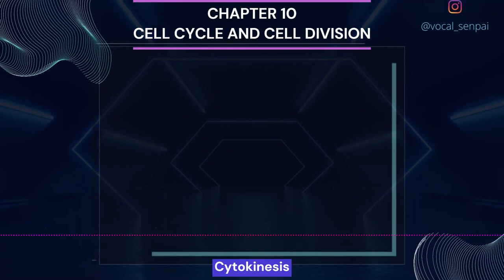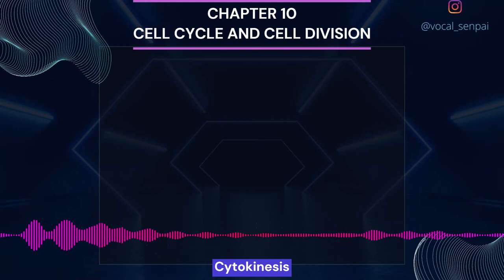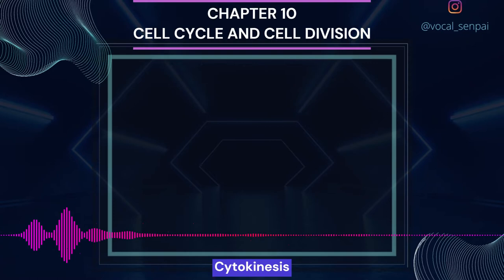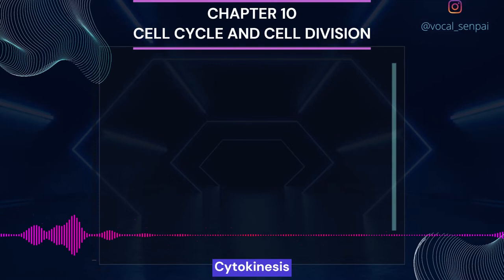Cytokinesis: Mitosis accomplishes not only the segregation of duplicated chromosomes into daughter nuclei (karyokinesis), but the cell itself is divided into two daughter cells by the separation of cytoplasm called cytokinesis, at the end of which cell division gets completed. In an animal cell, this is achieved by the appearance of a furrow in the plasma membrane, which gradually deepens and ultimately joins in the center, dividing the cell cytoplasm into two.